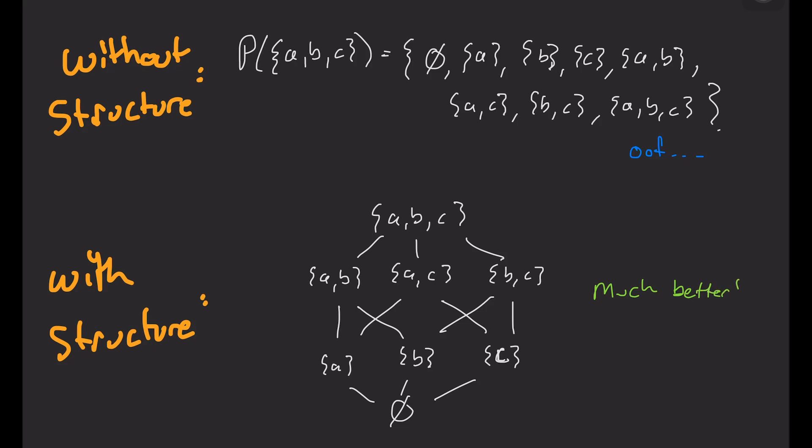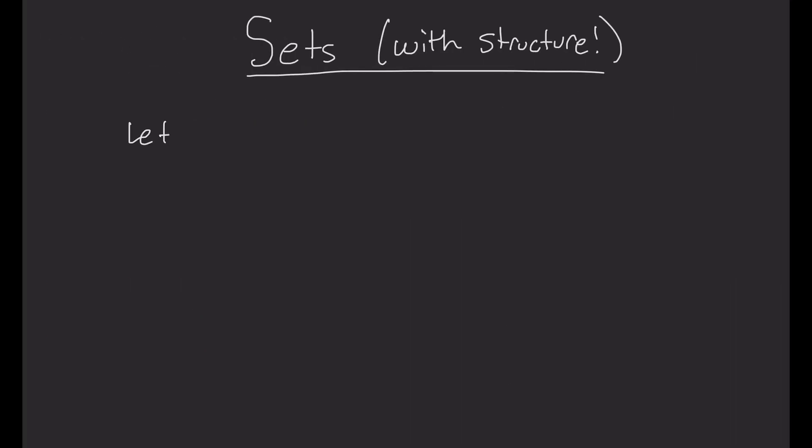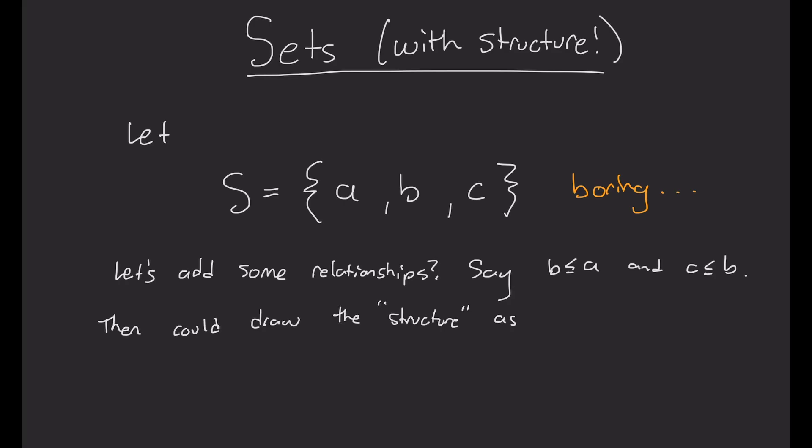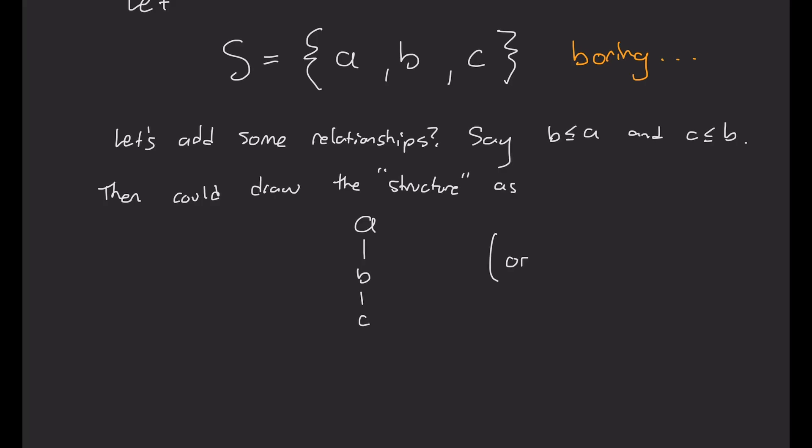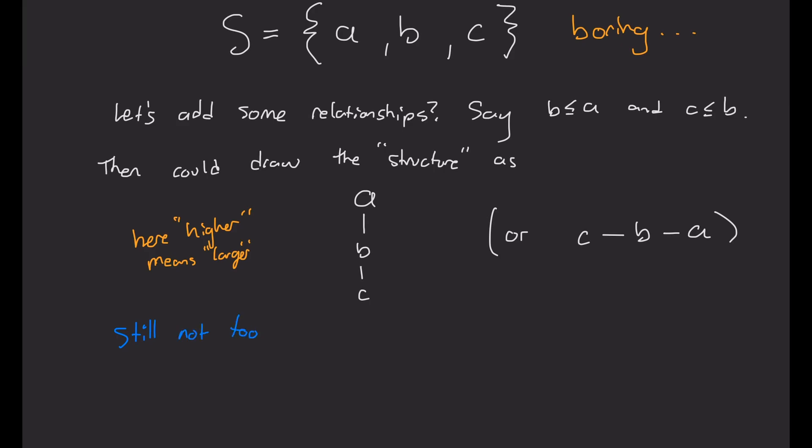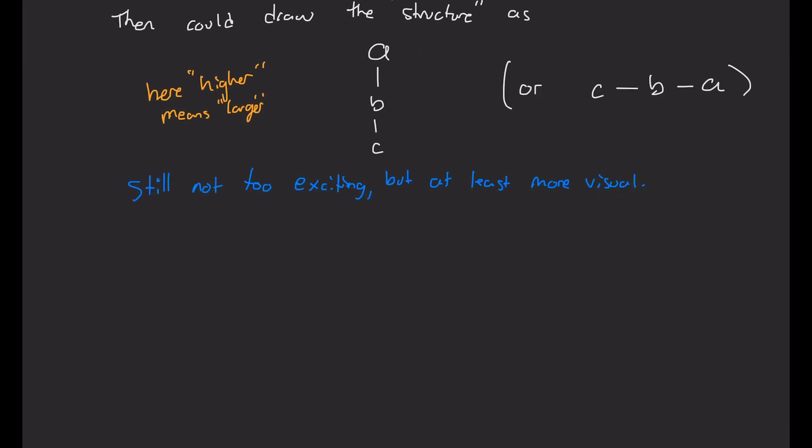And without further ado, let's start with looking at a couple dull-looking sets. A set or a collection of objects by itself is pretty boring. For example, if S is A, B, C, since there's no relationship that I'm telling you between A, B, and C, there's almost nothing that we can say about this set. We just have to write it out. So maybe let's add some relationships. As something basic, let's just consider B less than or equal to A and C less than or equal to B. And then we could maybe draw this structure as some sort of linear thing where maybe I'll put A on top and C on the bottom for higher means larger. We can also write it horizontally. That's fine, too. Okay, so this is still not too exciting, but at least it's a little bit more visual than just writing out the set.